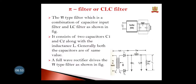Next is the PI filter, also called the CLC filter. At the rectifier output, a capacitor, then an inductor, and then another capacitor are connected, followed by the load resistor. It consists of two capacitors C1 and C2 along with an inductor. Generally, both capacitors C1 and C2 are of the same value.